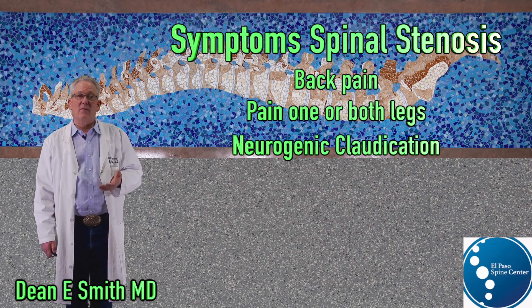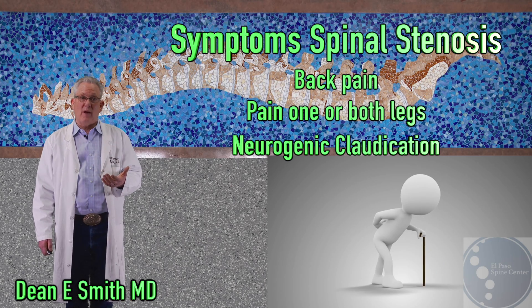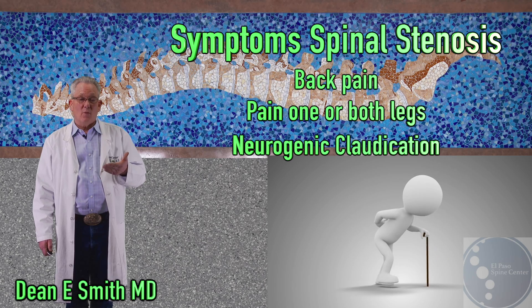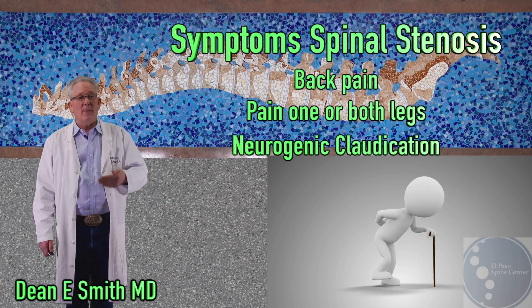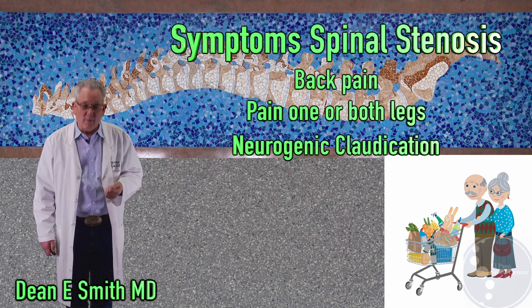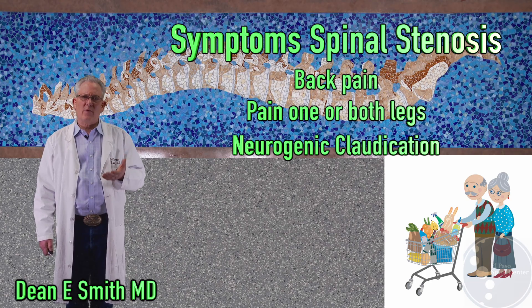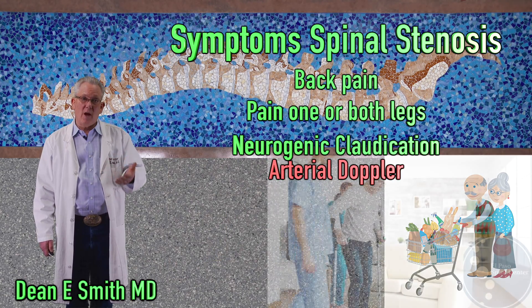In the case of lumbar spinal stenosis, these patients will typically bend their spine — they will bend over, and that opens up the spinal canal and can relieve their symptoms. You may see patients walking in a bent or flexed position, and frequently these patients are seen at the store leaning over a shopping cart because they find that allows them to walk longer distances. To evaluate peripheral vascular disease, an ultrasound is done of the lower extremities measuring the blood supply, known as an arterial Doppler study.